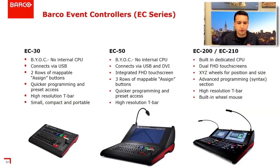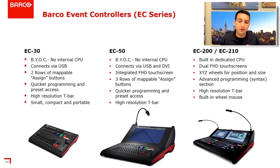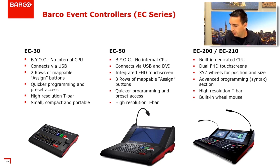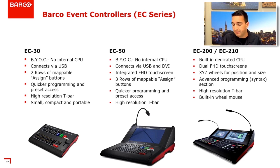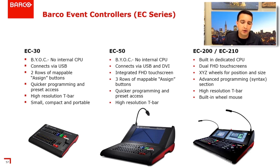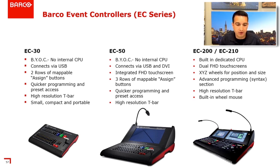Let's talk about Event Master control surfaces. We have the EC30, EC50, and EC210. The EC200 is now end of life — the predecessor to the 210 with the same physical design but a less powerful CPU. The EC30 is our smaller, more portable compact controller — it's a bring-your-own computer, connects via USB, has two rows of mappable assigned buttons, a high-resolution T-bar, and fits into a carry-on bag.